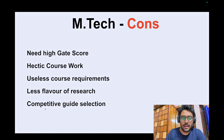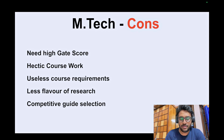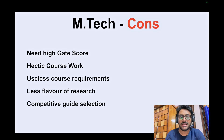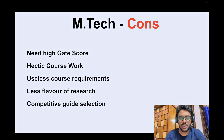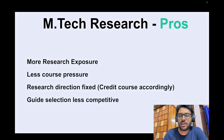Finally, guide selection is very competitive in MTech. In any IIT, there are very few professors in top research domains like machine learning and AI — maybe five to six really good ones in your department. In MTech there may be 30 to 40 or 50 students approaching those professors. On the other hand, for MTech Research maybe only three to four or five students are approaching the same professors, so their chances of getting selected are much better with less competition.